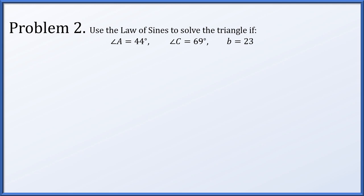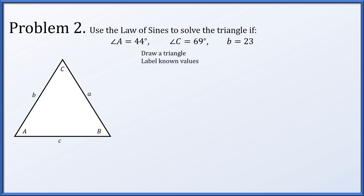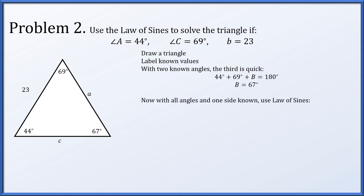Problem two: let's use the law of sines to solve a triangle where angle A is 44°, angle C is 69°, and length b is 23. Let's draw a triangle and label the known values — the two angles and the one side. Now we know two angles in a triangle, which means the third angle is direct to find. The sum of the three angles has to be 180, so the missing angle is 67°. Now that we know all the angles and one side, we can use the law of sines.